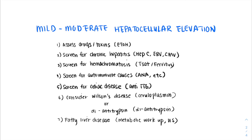Next, we should consider hepatitis. For a mild to moderate elevation, we're typically looking at hepatitis C, EBV, or CMV. Other etiologies include hemochromatosis, autoimmune diseases (especially in females), and celiac disease. More rare etiologies such as Wilson's disease or alpha-1 antitrypsin deficiency can also be considered, usually after screening for the previously mentioned causes. Finally, fatty liver disease is quite common but is a diagnosis of exclusion. A metabolic workup may increase pretest probability, ultrasound might show fatty liver infiltration, but the gold standard is a liver biopsy.